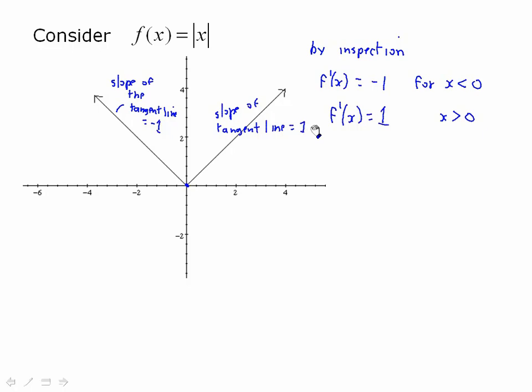So the derivative is negative 1, and it's positive 1. And then the obvious question would be, what about x equals 0?